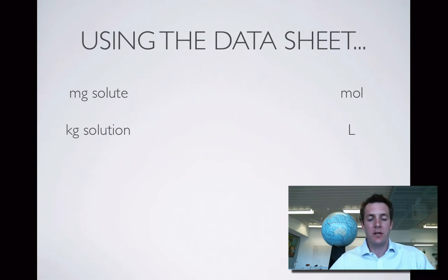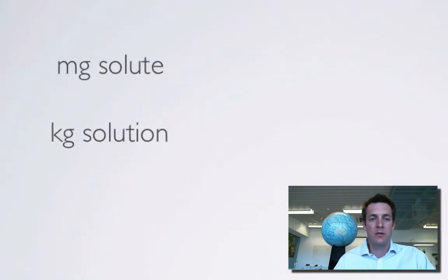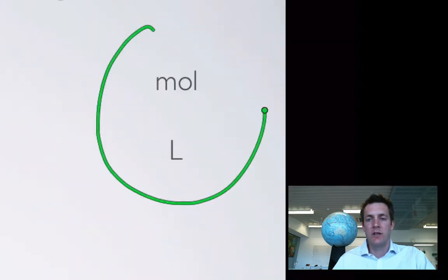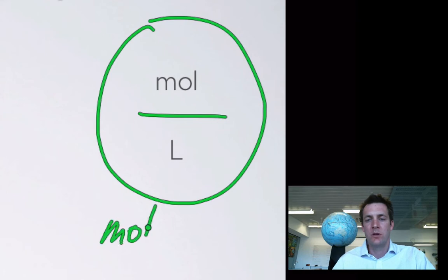So let's start off by looking at what information the data sheet has for us on this topic. Well, if we look on the data sheet we'll find that we've got the fact that parts per million is equal to the milligrams of solute divided by the kilograms of solution. And here is a unit which we should be really familiar with: moles per liter.